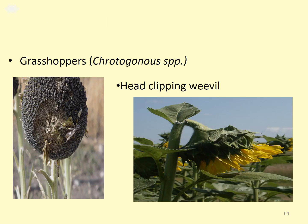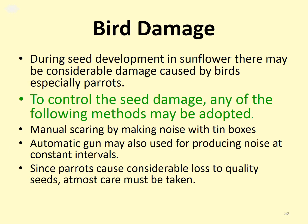Grasshopper damage is caused by Crotogonus species. Another pest is the Head Clipping Weevil. During seed development, damage is caused by birds, especially parrots. To control bird damage, manual scaring by making noise with a tin box or using an automatic gun producing noise at constant intervals can be adapted. Since parrots cause considerable loss to quality seeds, utmost care must be taken, especially during the maturity period.